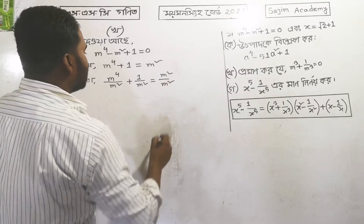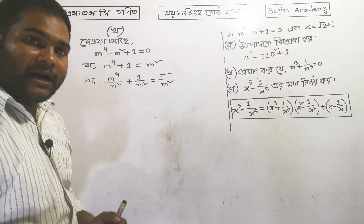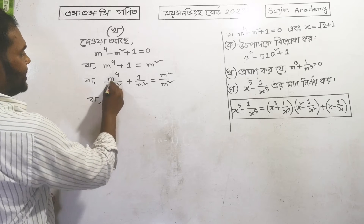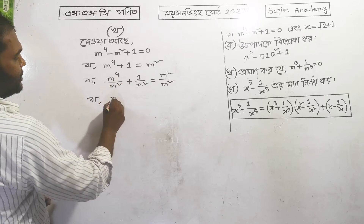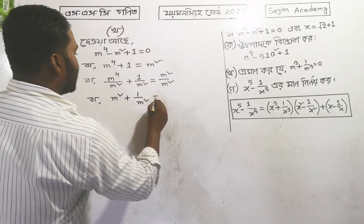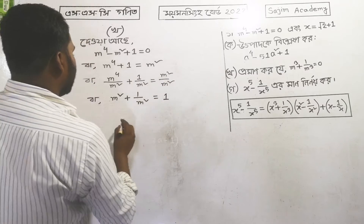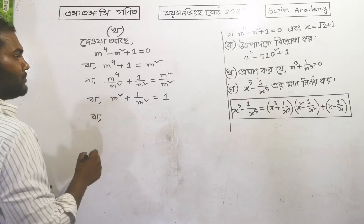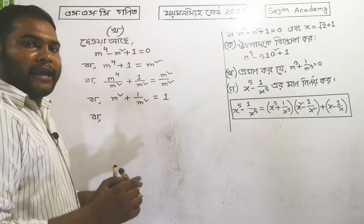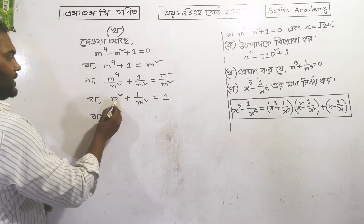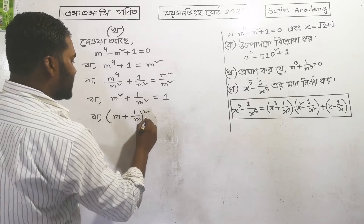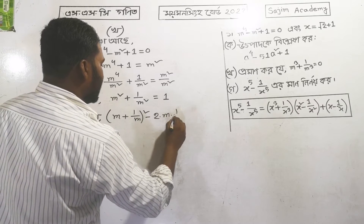Em square amra ki ki em square dara bhag kuri chi. Ekhun dekho ekhane dike amra likhti pari. Ekhane judi amra karm monnir nikoro dekho — em kiv plus wambai em kiv-er monnir nikoro. Thole obhoshyo amade s² plus b² = (a plus b) whole square minus 2ab, 2ab.